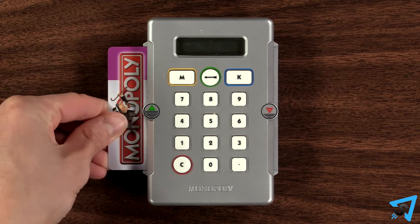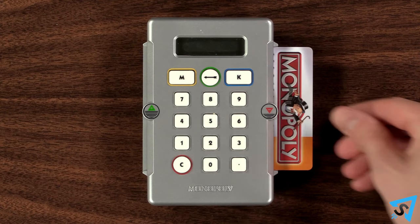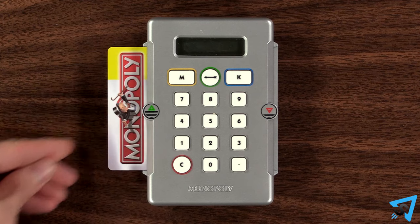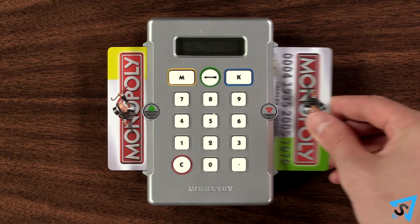Whenever you need to add money to your account, put your card in the green side. Whenever you need to spend money, put your card in the red side. If you need to pay another player, then they put their card in the green side while yours is in the red.